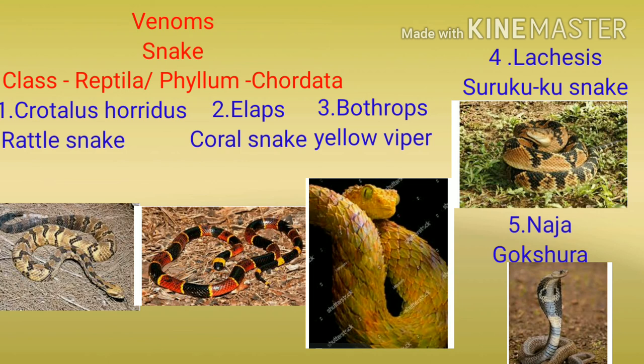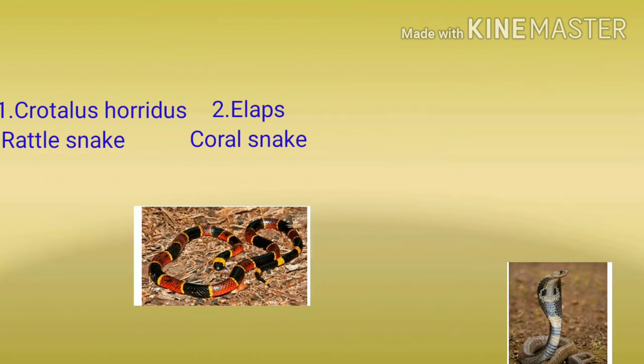Our first snake is Crotalus horridus, commonly called rattlesnake. Second one is Elaps, commonly called coral snake. The third one is Bothrops, i.e. yellow viper. Fourth one is Lachesis surukuku snake. And fifth one is Naja tripudians, collected from India.